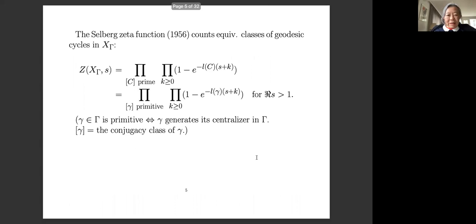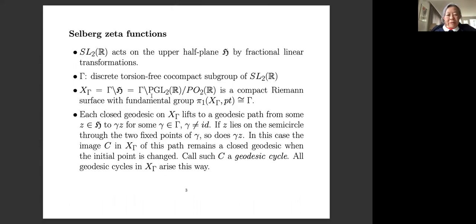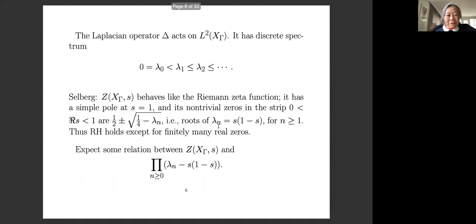Ihara looked at Selberg's zeta function and observed that this Riemann surface can be expressed as a double coset of PGL2(R). He thought: what happens if we replace R by a p-adic field Q_p — the completion of Q at the non-archimedean place? So that's what we are going to do.